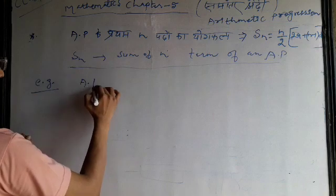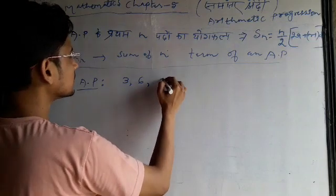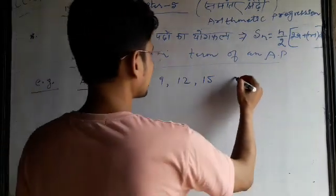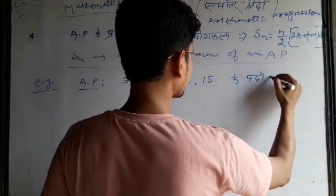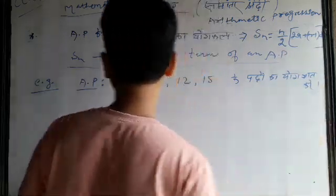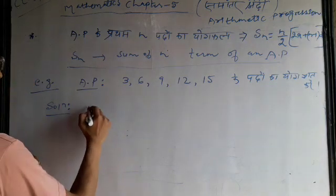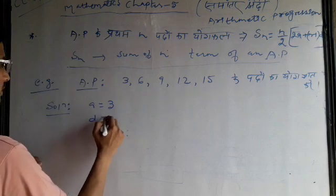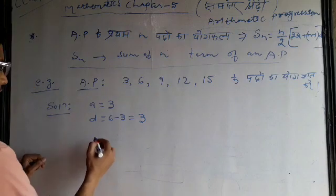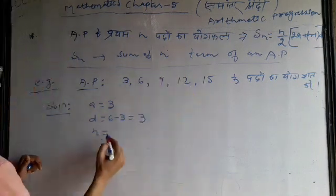Next example. The A.P. is 3, 6, 9, 12, 15. Here, a equals 3, common difference d equals 6 minus 3 equals 3, and n equals 5.